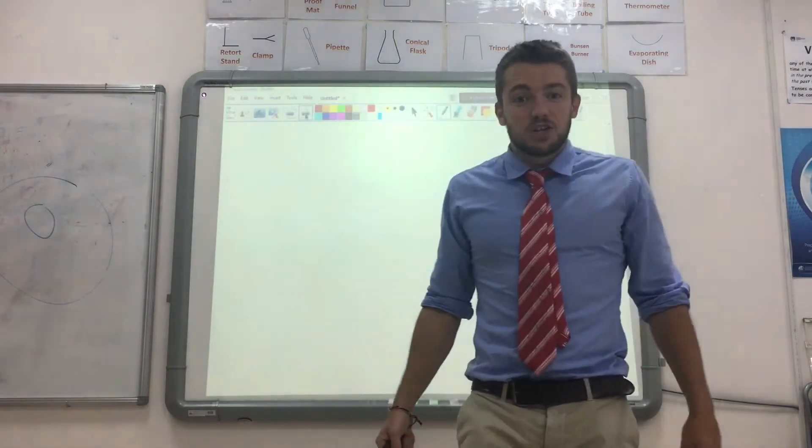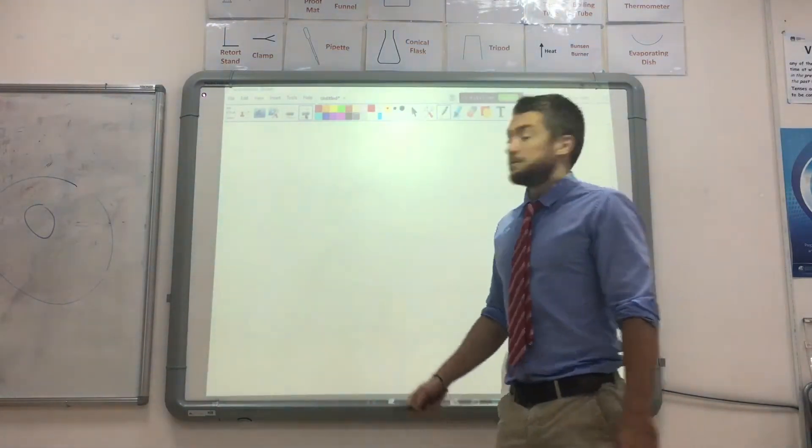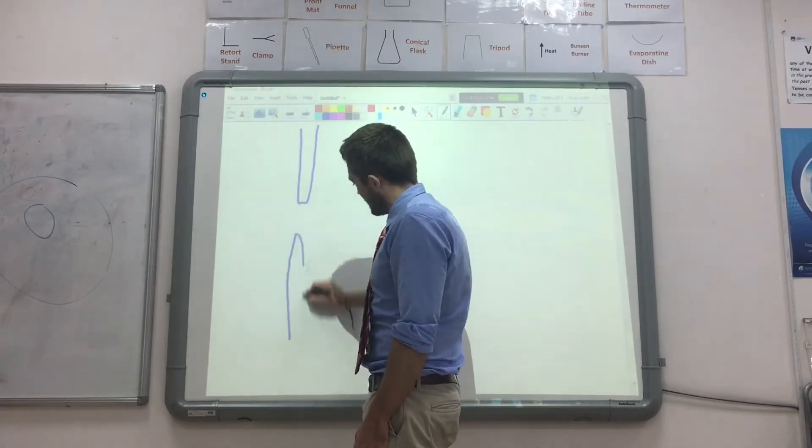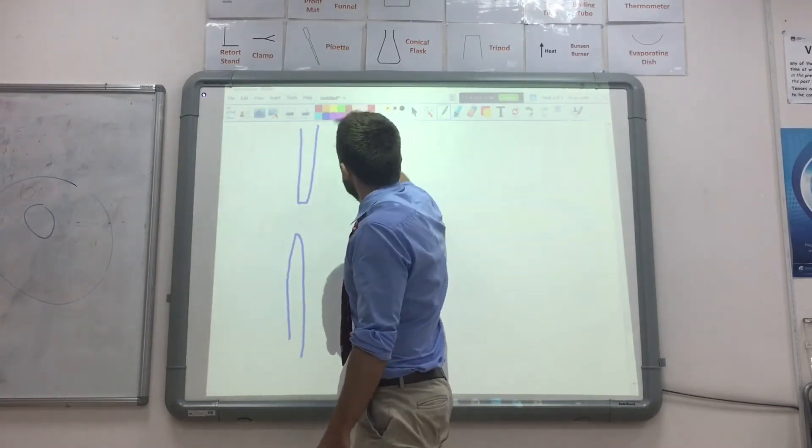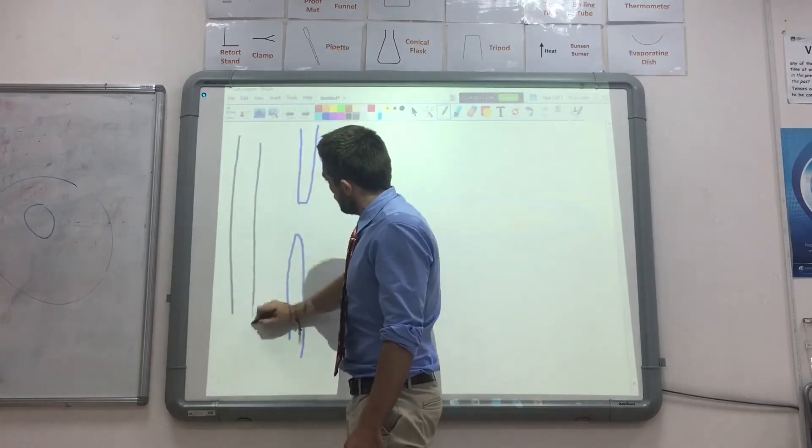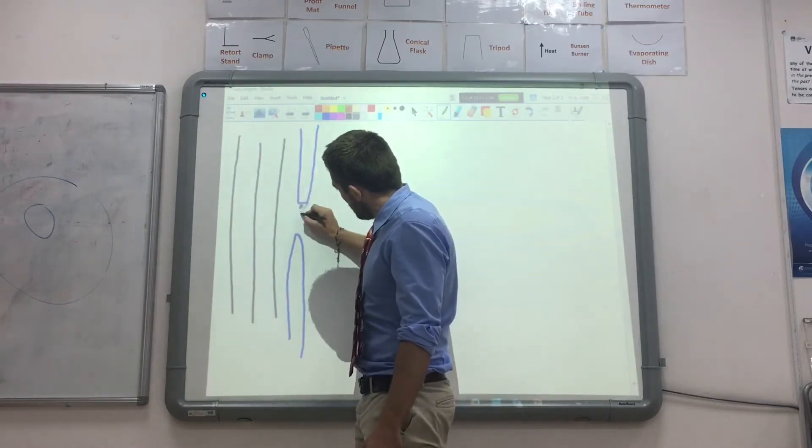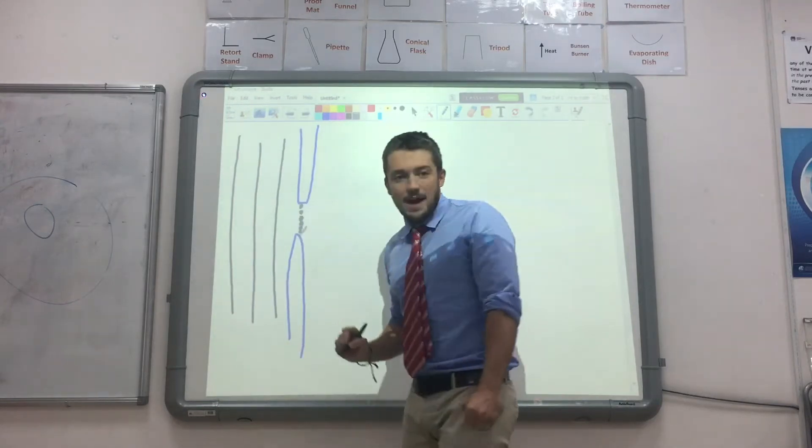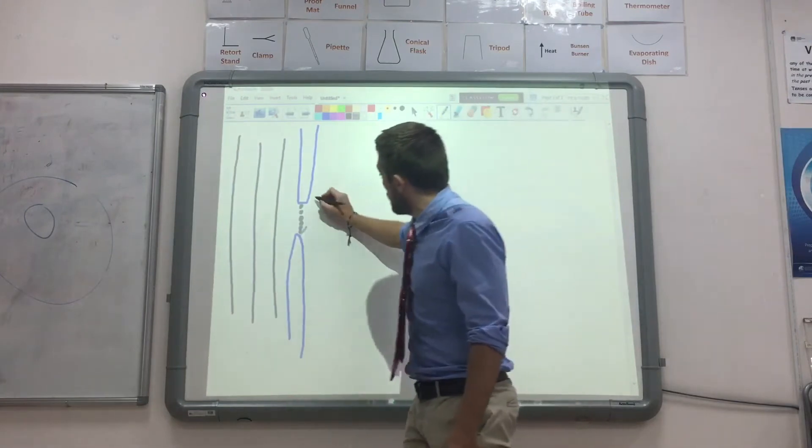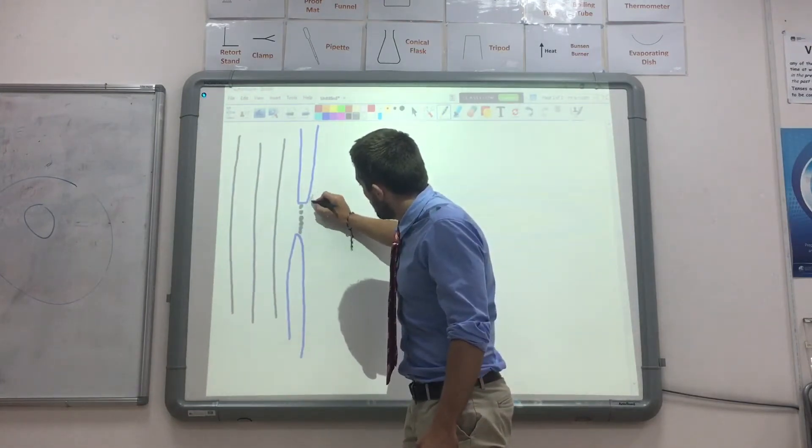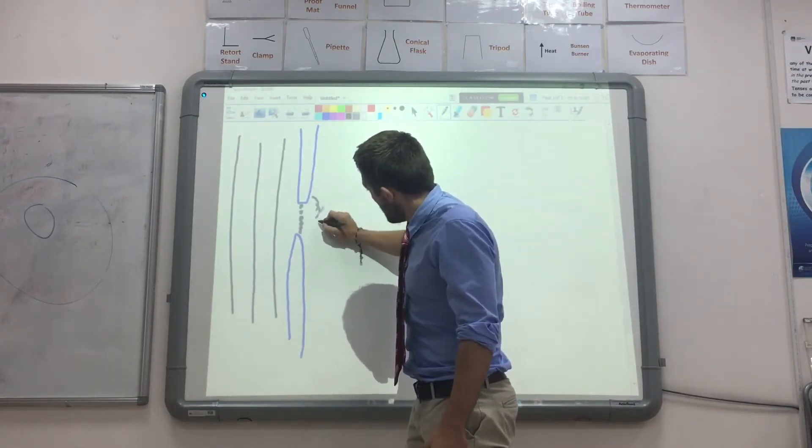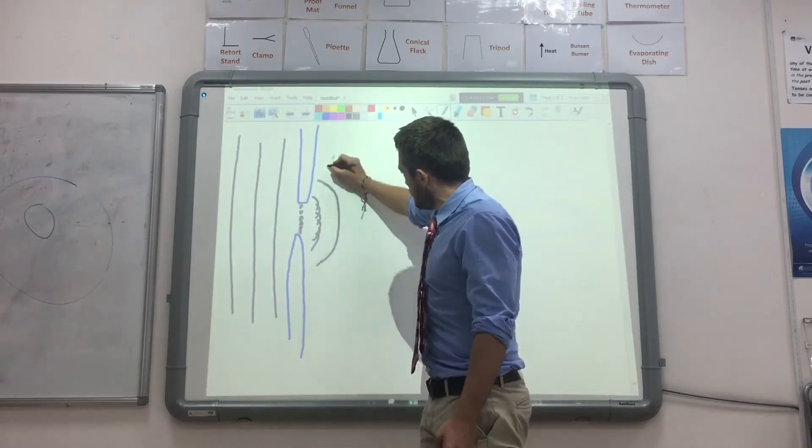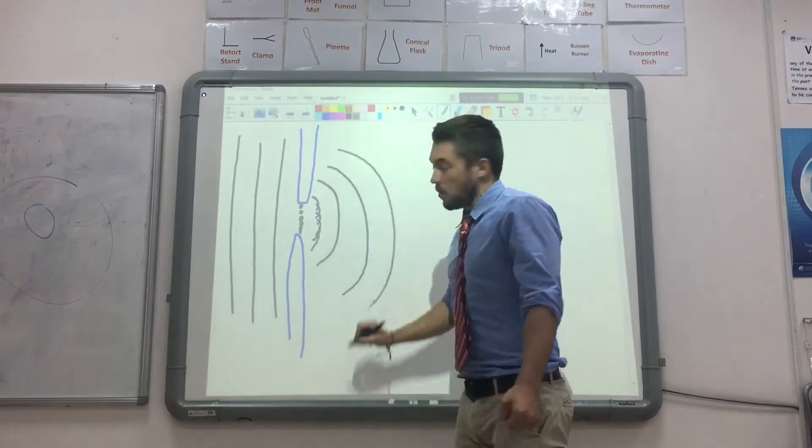So far we have seen diffraction happening because of Huygens principle, which says that if you have a gap similar in size to the wavelength and waves coming towards it, then each point on the gap acts as a source of waves. This is Huygens principle - each of those sources emits a wave, and the waves interfere with each other, and you end up with circular wave patterns like that.